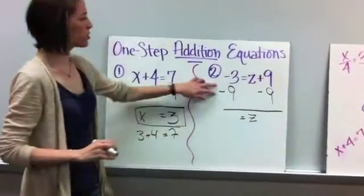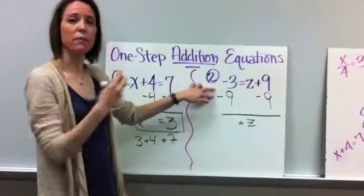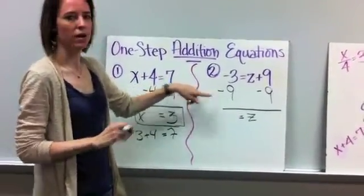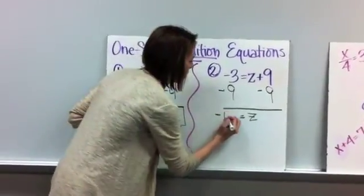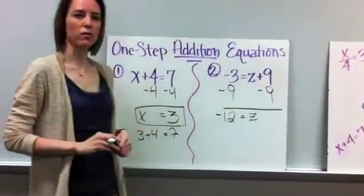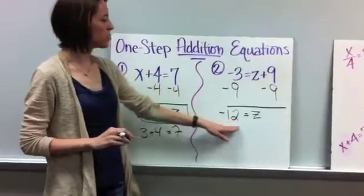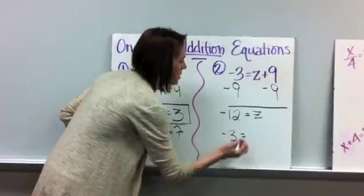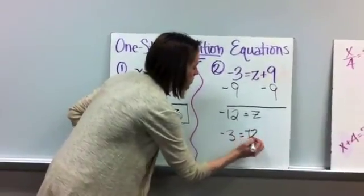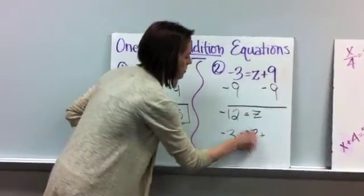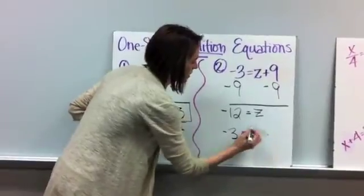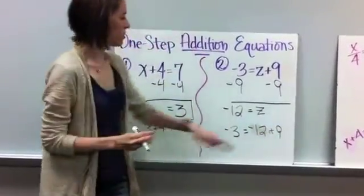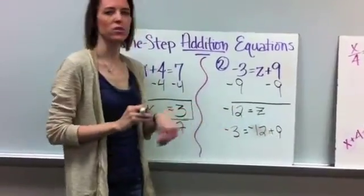And here's where your integer rules come into play, which you should have been getting pretty good at based on the polynomial. So you have a negative 3 plus a negative 9, which gives you a negative 12. So basically what we're saying is that z is equal to negative 12. And if I go back here and plug it in, I have negative 3 equals negative 12. Do that again. Negative 12 plus 9. And we know that negative 12 plus 9 gives us negative 3.